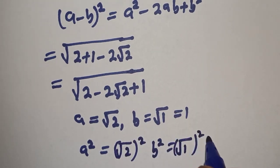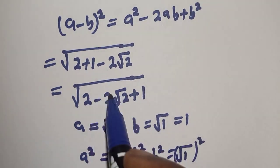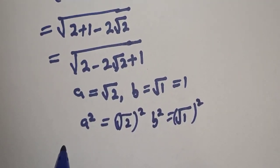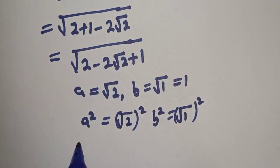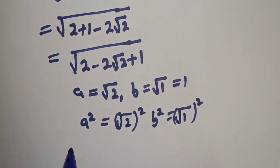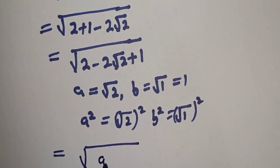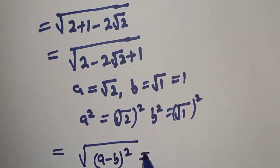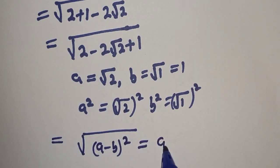So if you compare this here, we have this is equal to √((a-b)²) which is equal to a² - 2ab + b².